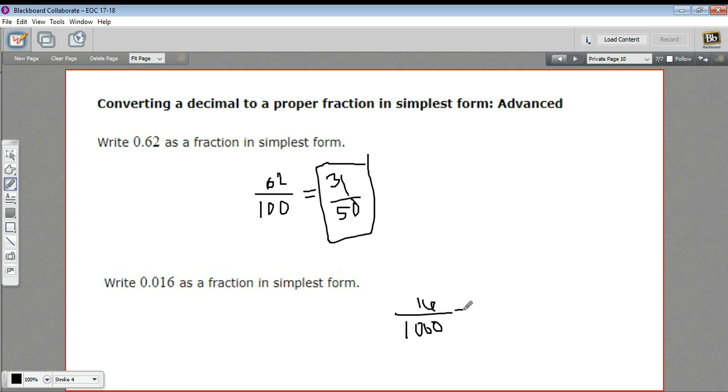Again, they're both even. So I could divide the top and the bottom by two. Sixteen divided by two is eight. A thousand divided by two is five hundred. Still both even. So I can divide them by two again. Eight divided by two is four. Five hundred divided by two is 250.